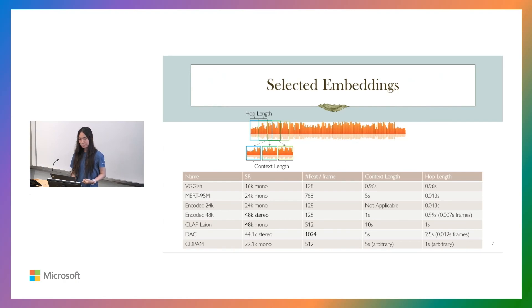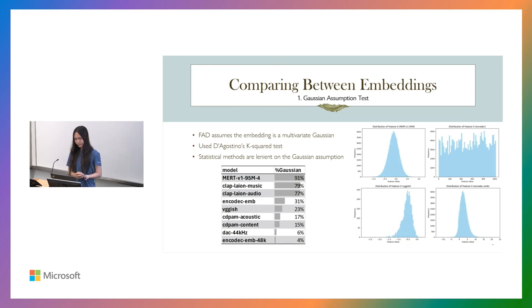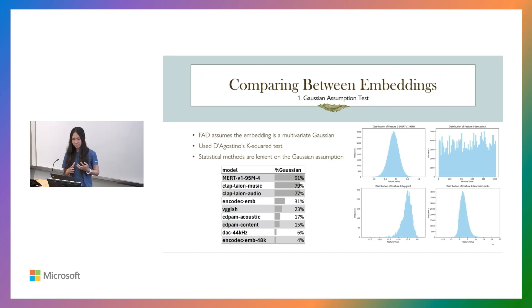With this many embeddings, how do we compare between them? First, we have the Gaussian Assumption Test. Fréchet Audio Distance assumes that the embeddings are a multivariate Gaussian because it uses a closed-form formula optimized for taking only mean and covariance matrix as inputs. We used the D'Agostino's k-squared test to assess the Gaussianness of each model. The percentage value represents the percent of features in each embedding that passes the Gaussian test. Many embeddings have a large percentage of features that don't pass the Gaussian test. However, statistical methods like FAD are lenient on the Gaussian assumption, so a lower score doesn't mean they cannot be used for FAD, but that they might have higher variance for different random subsets of the same dataset.